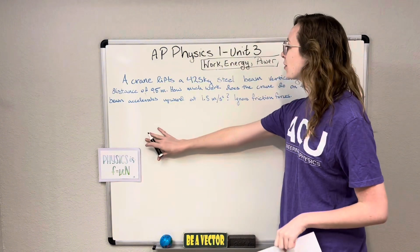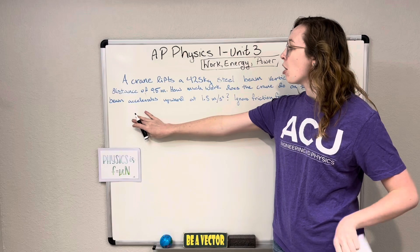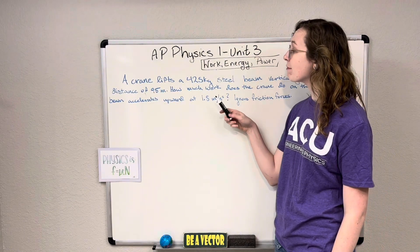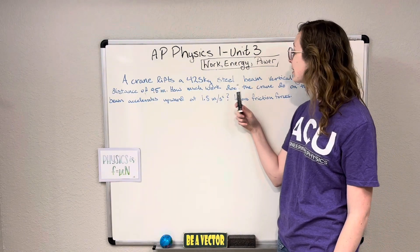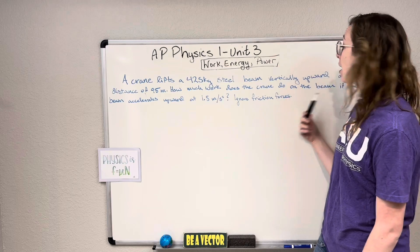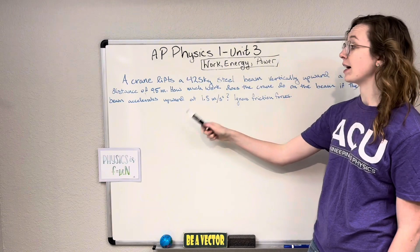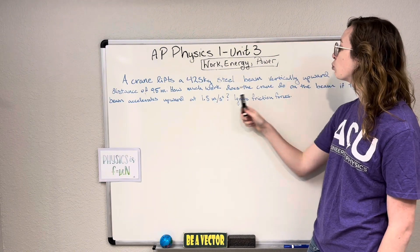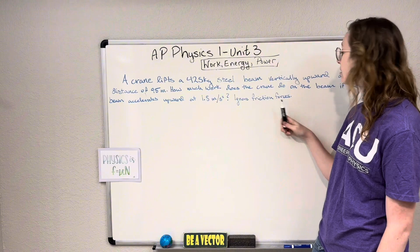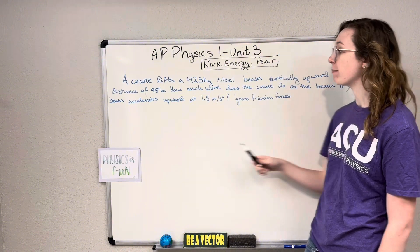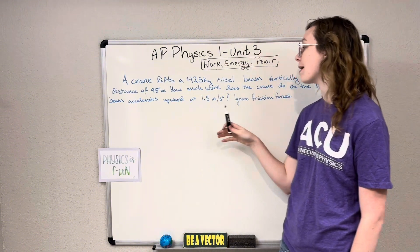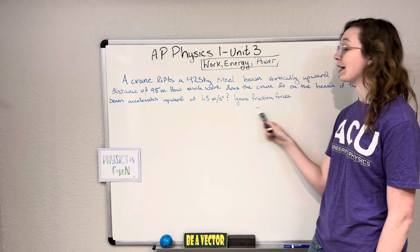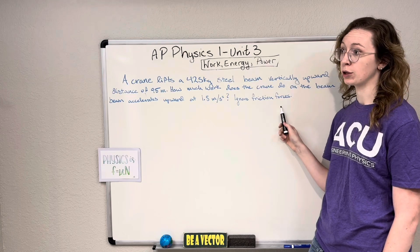Here is our problem. We have a crane that is lifting a 425-kilogram steel beam vertically upward a distance of 95 meters, and we're asked to calculate how much work the crane does on the beam if the beam accelerates upwards at 1.8 meters per second squared. We can ignore friction forces.